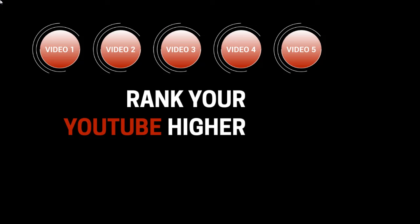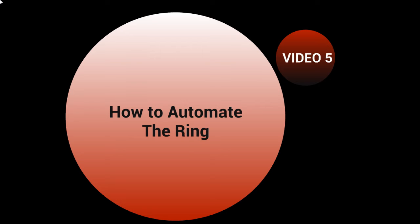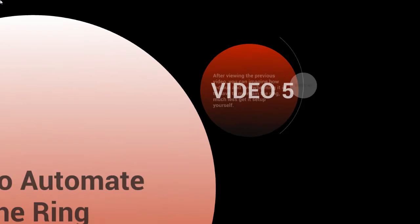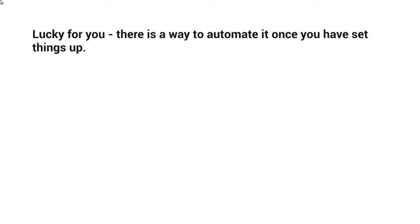Hello and welcome back, this is video number five. We're going to talk about how to automate the ring, now that you understand how everything is interlinked, connected, and how you can be creative and make your own ring. After viewing the previous video, you can imagine how tedious and overwhelming it is to have to maintain the ring, much less get it set up yourself. But lucky for you, there is a way to automate it once you have things set up — getting things set up is the tedious process.